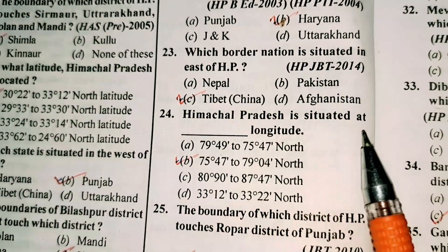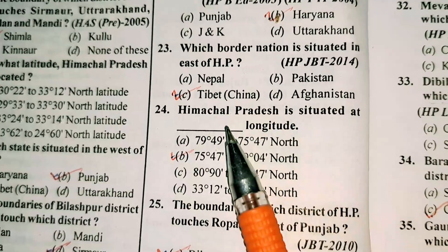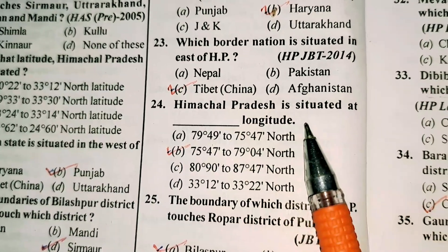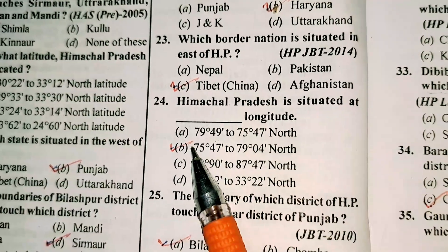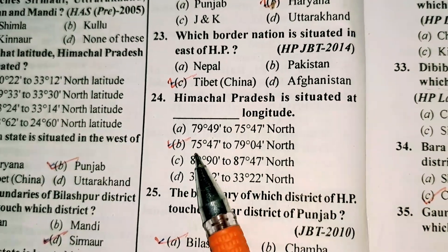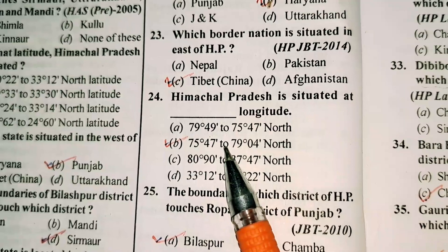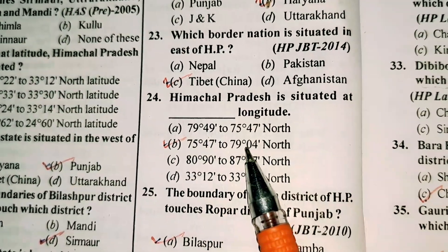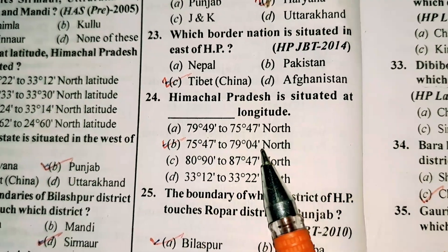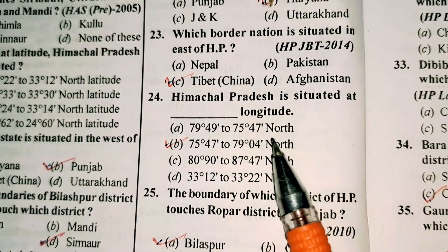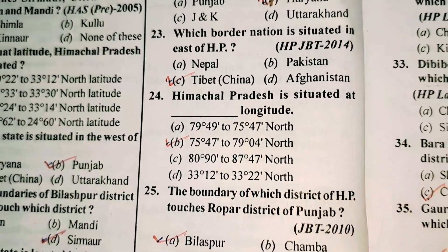Himachal Pradesh is situated at which longitude? Option B is correct — 75 degrees 47 minutes to 79 degrees 04 minutes north.